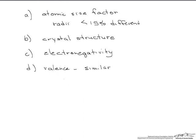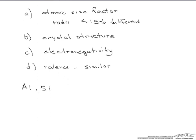We will look at aluminum and silicon. If you look at a phase diagram, what you'll find is that they are partially soluble. Let's see which rules they satisfy and which rules they don't.